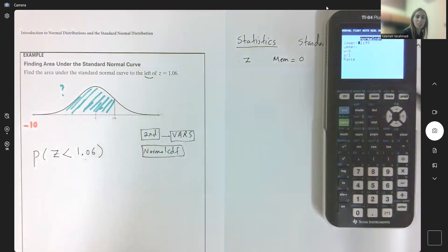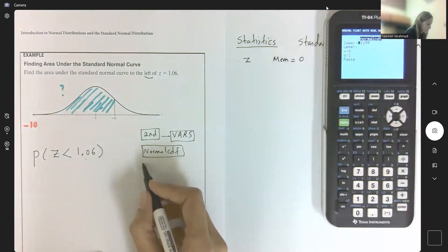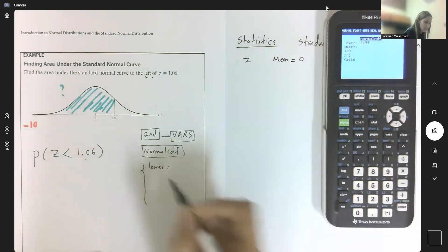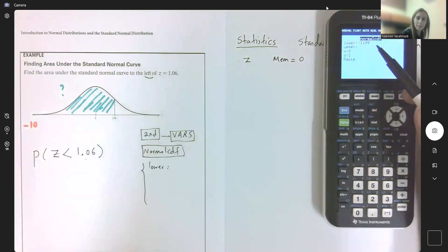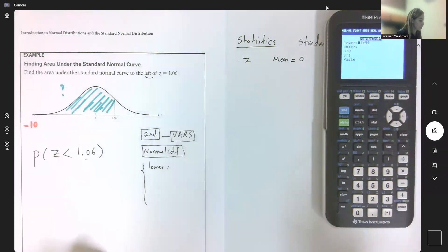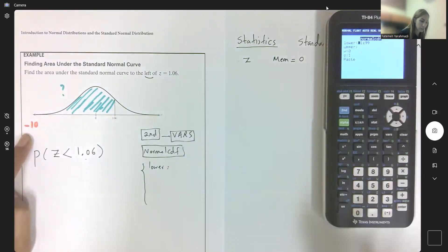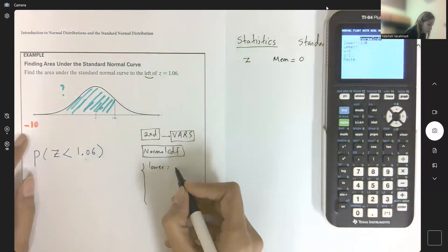In normalcdf, we have some values to enter. What is your lower limit, upper limit, mean, and standard deviation? The lower limit by default is negative 1E99. You can change this to a very small number like negative 10. Be careful when using a negative sign—this is not subtraction, this is the negative sign down here. Select negative 10. This is my lower bound.